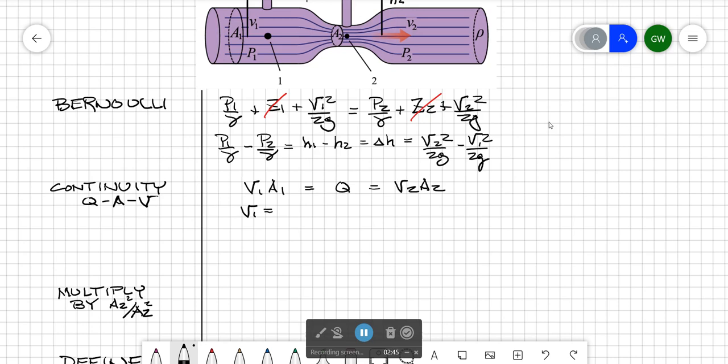So v1 equals q over a1 and v2 equals q over a2. Let's get rid of the v terms and instead substitute the q terms into our equation that we derived, our Bernoulli equation. Delta h equals v2 equals q squared over 2g A2 squared minus q squared over 2g A1 squared.